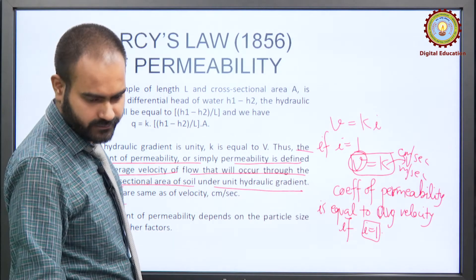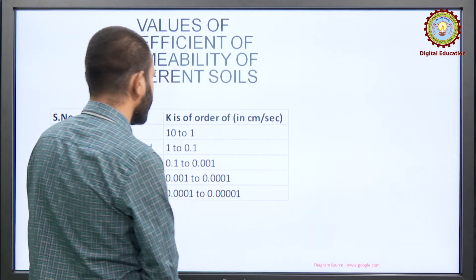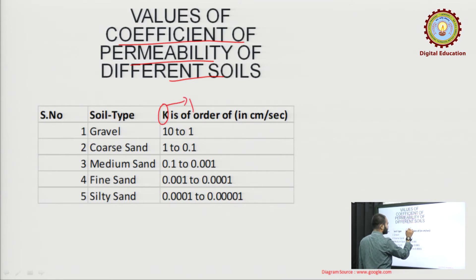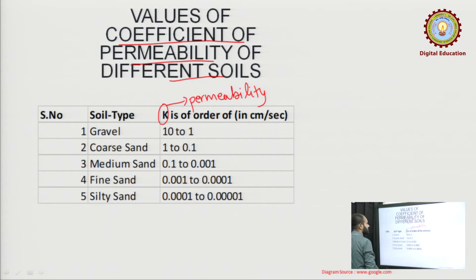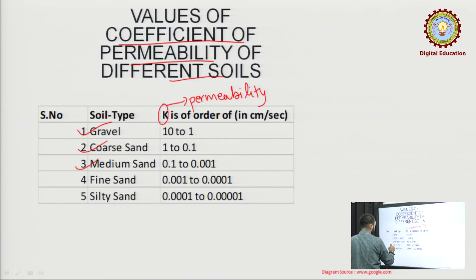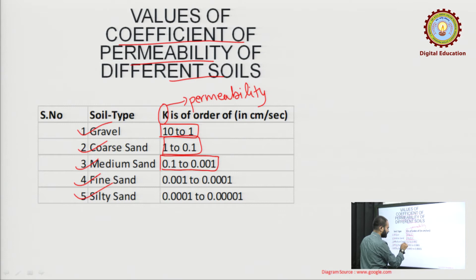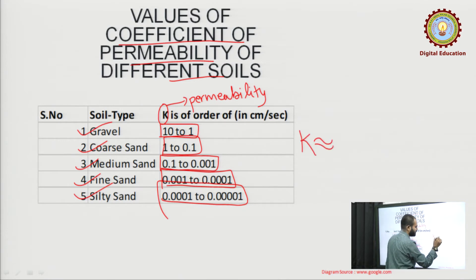Now let us look at the values of coefficient of permeability for different soils. K is actually a measure of permeability. You can see that some soils have very high permeability — this is the highest — then it reduces: lesser, lesser, and lesser. For gravel, you can see the highest value, around 10 to 1, and it reduces slowly.